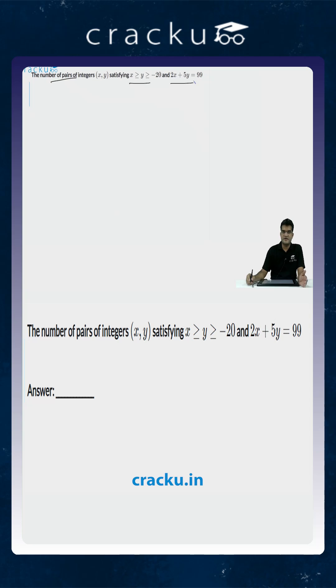So let us try to first figure out what are the boundaries for y. In this case we are told that x is greater than or equal to y and 2x plus 5y is equal to 99.